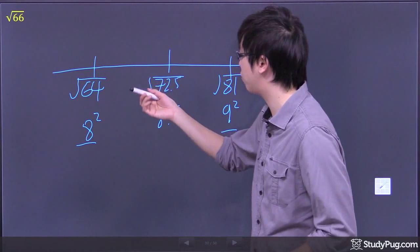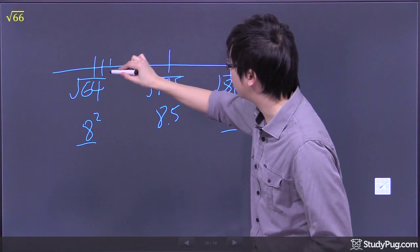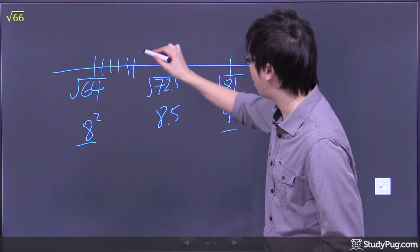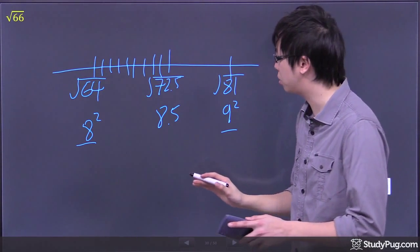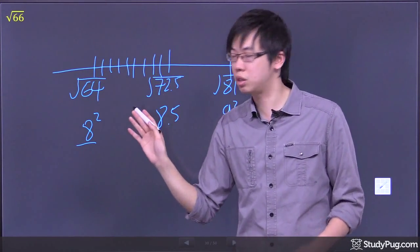I can actually do 8.5. Then I go, that's halfway, that's one, two, three, four, five, six, seven, eight and a half, maybe. This is an approximation, so don't be too serious about these guys. Approximately 8.5 units.